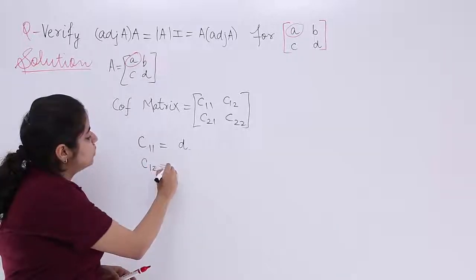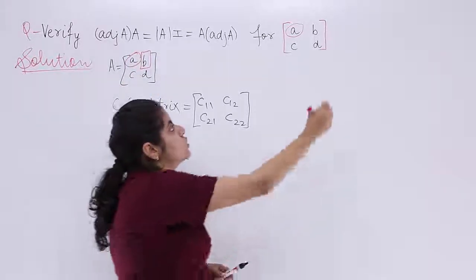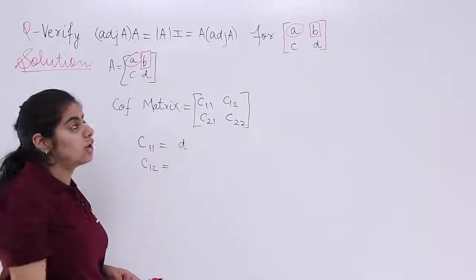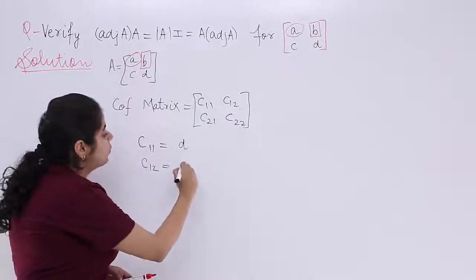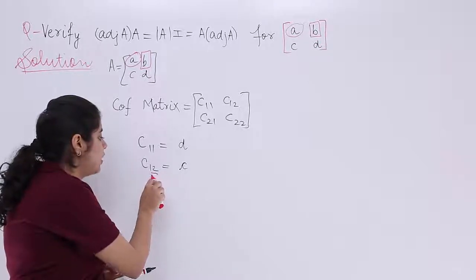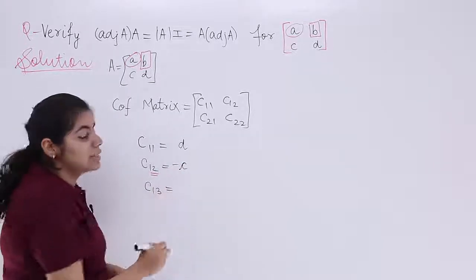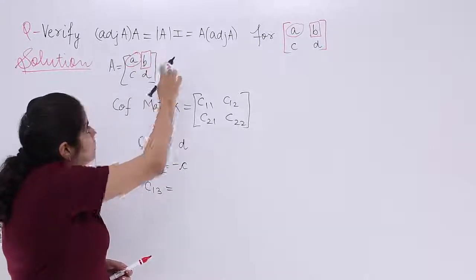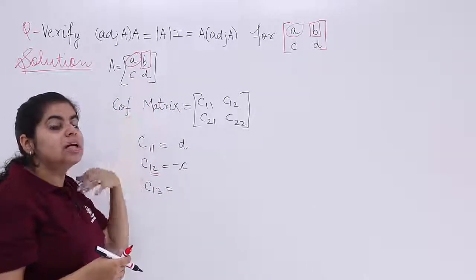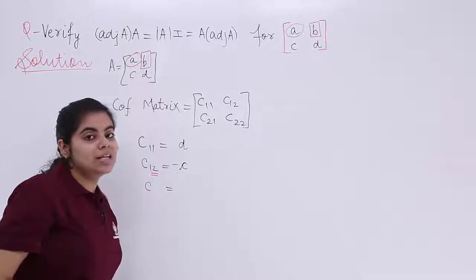C12 is the cofactor of element b (first row, second column). Ignoring the second column and first row leaves c. Since 1+2=3 is odd, C12 = −c. There is no C13 since this is a 2×2 matrix, so we move on. C21 is the cofactor of element c (second row, first column).